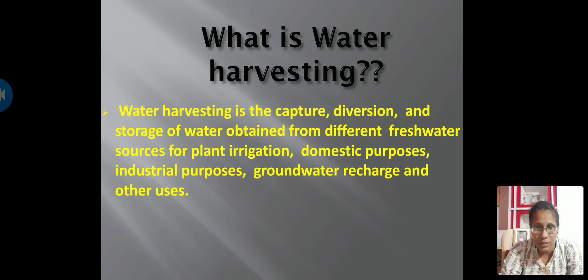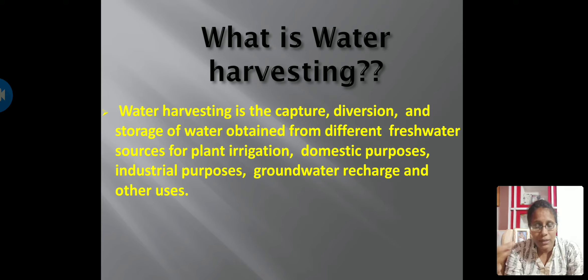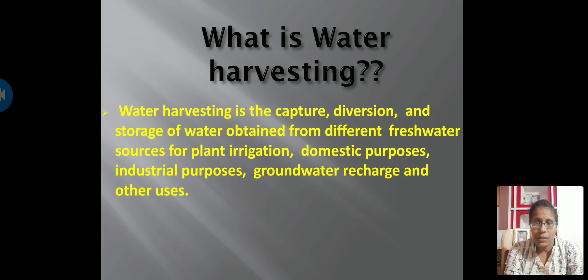The common fresh water source is rainfall. So the collection of this water, storing it, and using it for different purposes like irrigation, domestic purposes such as watering your garden or washing utensils, industrial purposes, and also for groundwater recharge — all of this is called the water harvesting system.